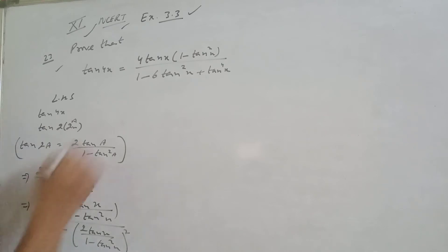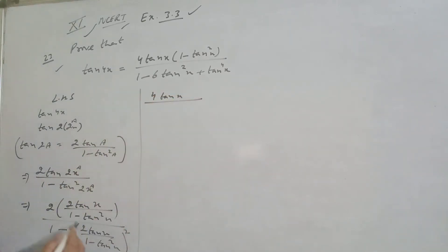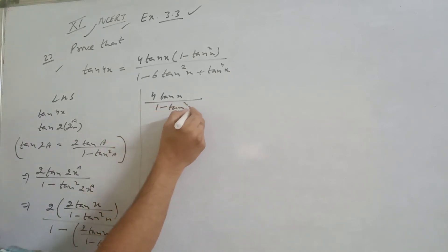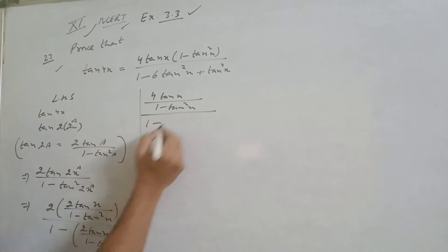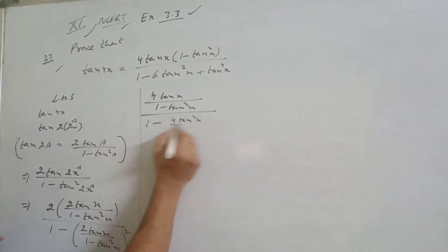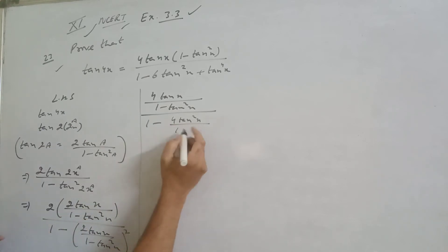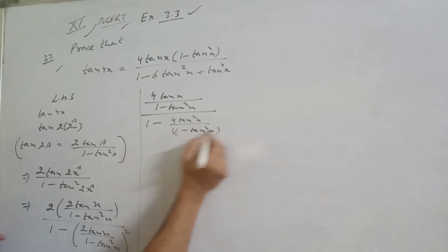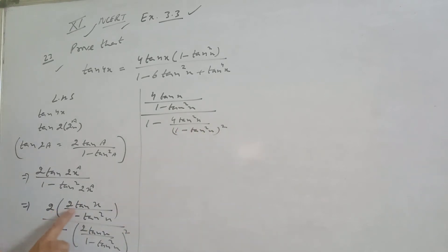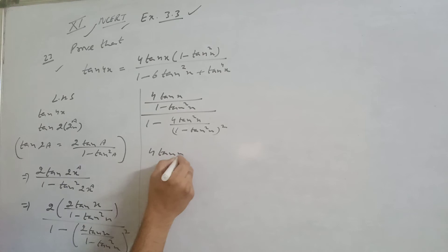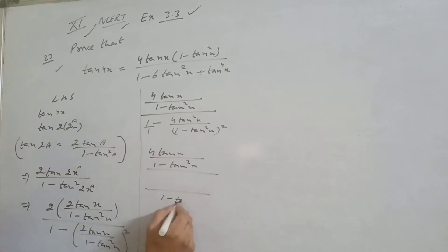Now, substituting the value of tan 2x, the numerator becomes 2 into 2 tan x upon 1 minus tan square x, giving us 4 tan x upon 1 minus tan square x.